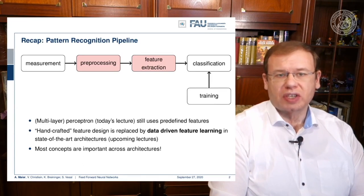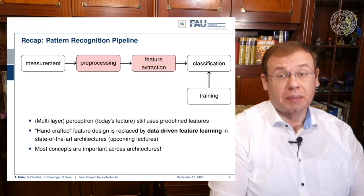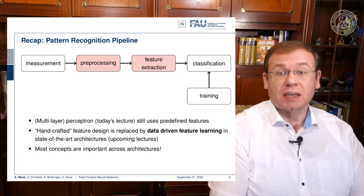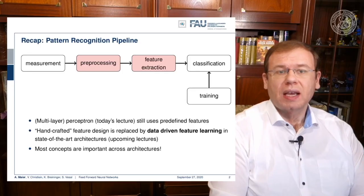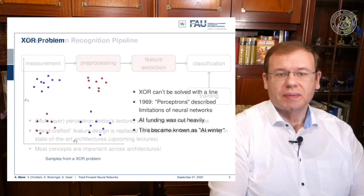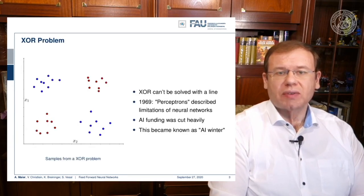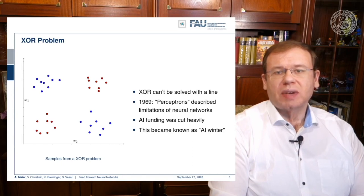Then, we want to do feature extraction. You remember the example with the apples and the pears. From these, we extract features, which then result in some high-dimensional vector space. We can then go ahead and do the classification. What we've already seen with the perceptron is that we are able to model linear decision boundaries.